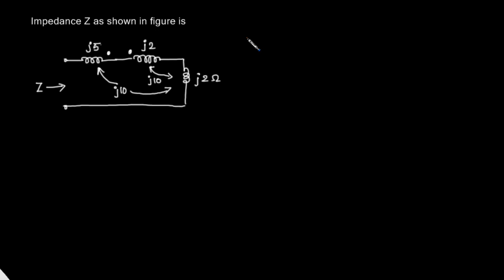This question was asked in an Electronics and Communication gate exam. We are given a circuit which consists of inductances, but there is coupling between these inductances. We have to find out what is the impedance looking in here.